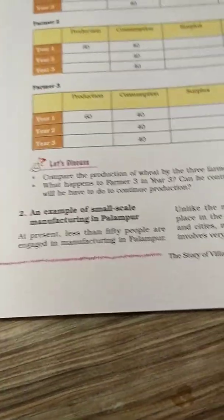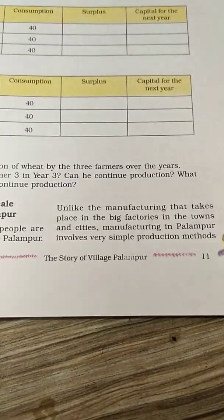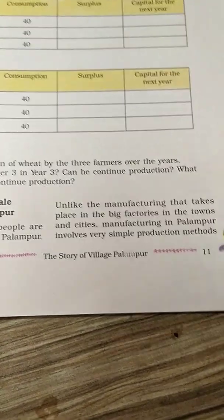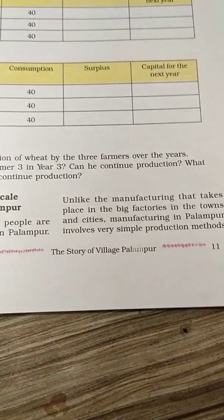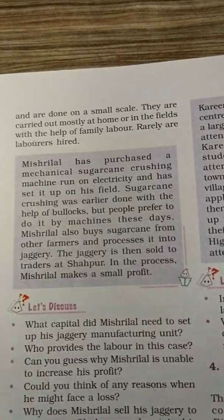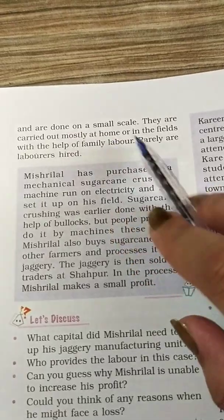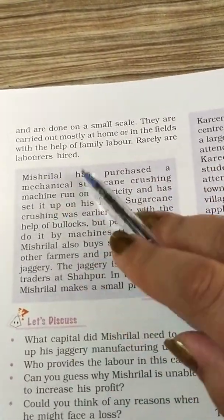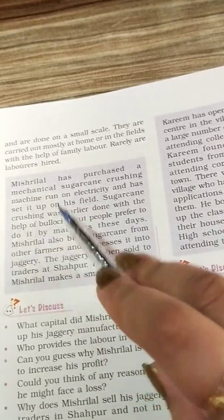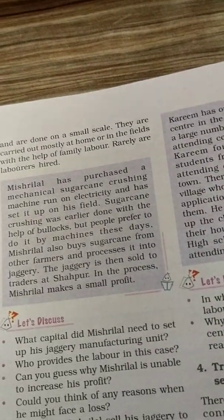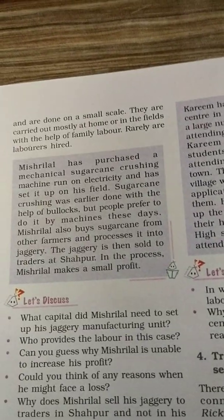The next is small-scale manufacturing in Palampur. Although most manufacturing happens in large factories in cities, in village Palampur small-scale manufacturing takes place. An example given in the book is manufacturing jaggery from sugarcane. This work is done at home or in the fields, where people sit together and work. Other examples of village manufacturing include making papad at home and making candles.